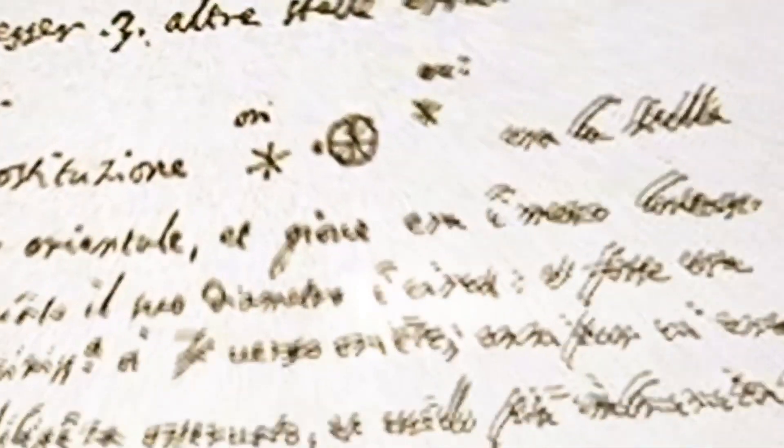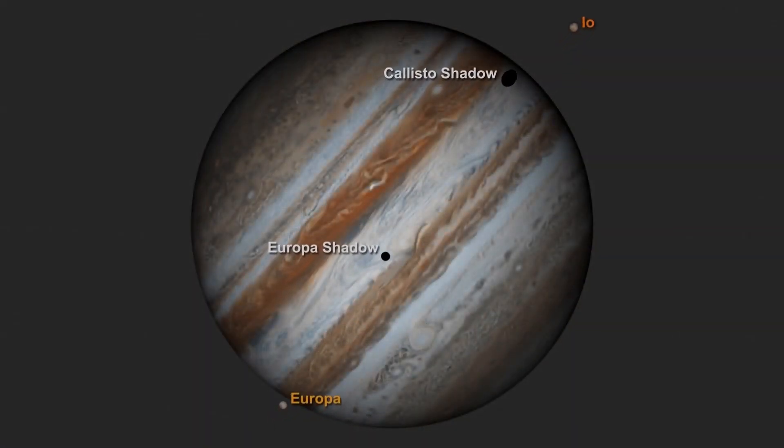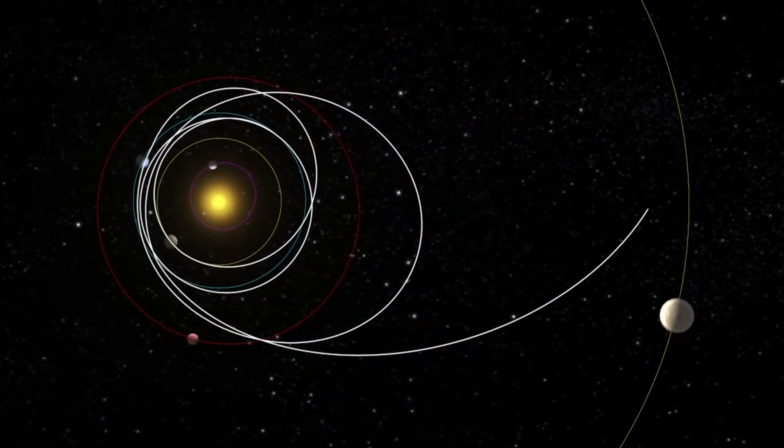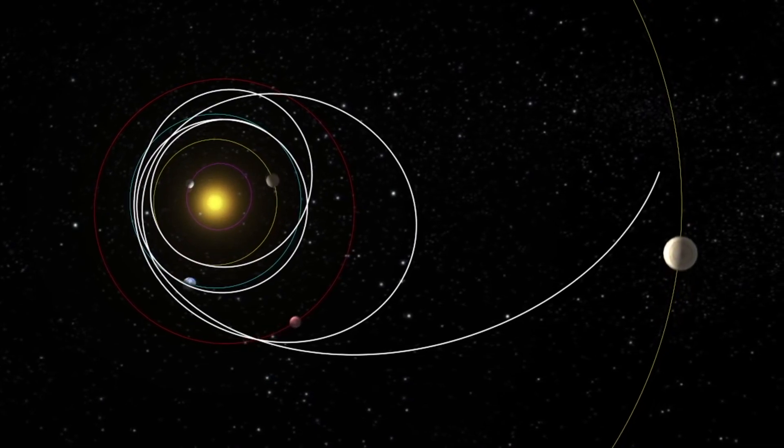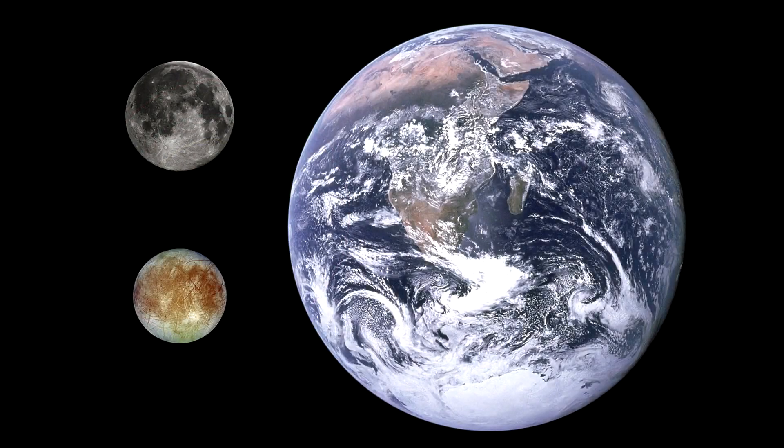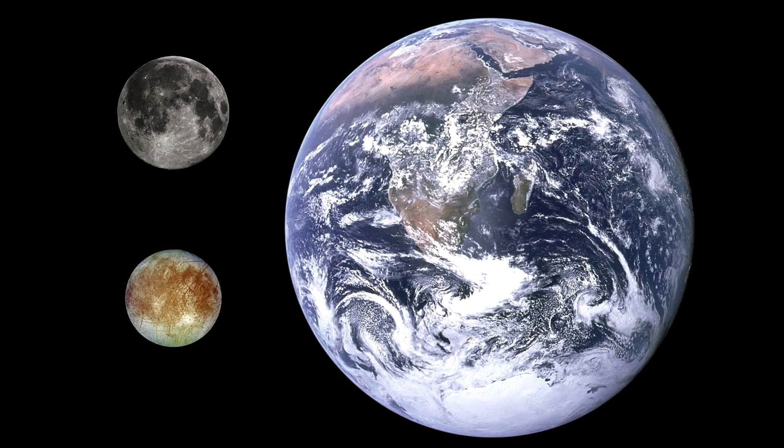So Europa, also known as Jupiter 2, is the sixth moon of Jupiter, the smallest of the four Galilean satellites. It was discovered in 1610 by Galileo Galilei. Over the centuries, more and more comprehensive observations of Europa were made with telescopes and since the 70s of the 20th century with flying spacecraft.